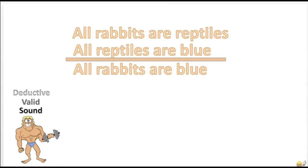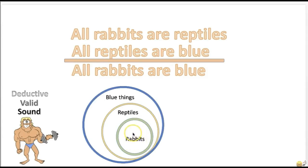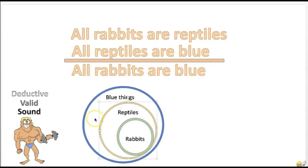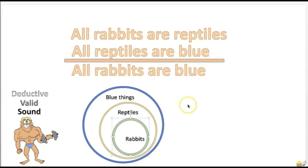In this argument, the premises are not true, but they do support the conclusion. If we assume that the premises are true, then it's impossible for the conclusion to be false. The argument: 'All rabbits are reptiles. All reptiles are blue. Therefore, all rabbits are blue.' If all rabbits are reptiles, and all reptiles are in a group of blue things, then all rabbits are also in a group of blue things. You'll recognize the form later — categorical syllogism, modus ponens, modus tollens, etc. — but for now, you can just draw circles. Really helps you out.